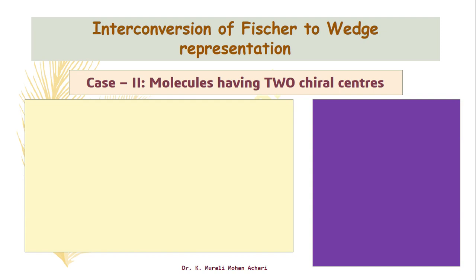Let us take an example of a molecule which has two chiral centres. For example, let me take L-tartaric acid. In Fischer form, this L-tartaric acid, as we know, has two chiral centres. When we have two chiral centres, it is our duty to give absolute configuration to the chiral centres. First we need to give the numbering for this Fischer representation where the C2 carbon as well as C3 carbon are chiral centres, because these centres are bonded to four different ligands. So let us give the absolute configuration for the C2 carbon as well as C3 carbon.